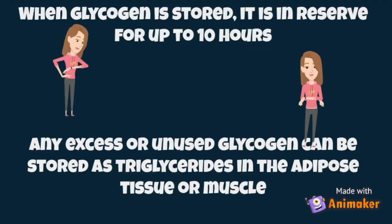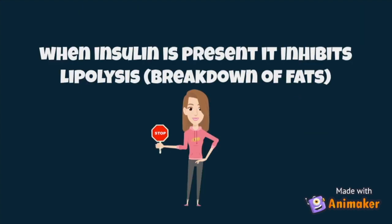When glycogen is stored, it has been reserved for up to 10 hours. Any excess or unused glycogen can be stored as triglycerides in the adipose tissue or in the skeletal muscle. When insulin is present, it also inhibits lipolysis, which is the breakdown of fats. This is not good if you're on a high fat, low carb diet — if you eat some chocolate or chips, insulin will be present in your blood, meaning all that fat won't burn for energy; it's actually going to store as fat. This is the simple relationship between insulin and how it can inhibit lipolysis.